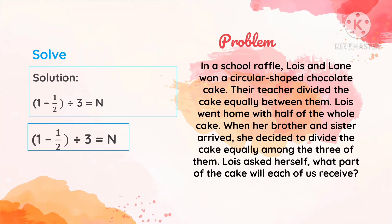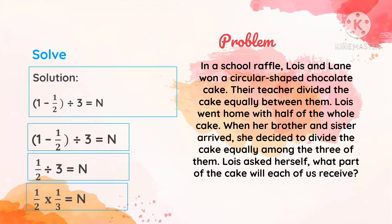Using our number sentence: 1 minus one-half divided by 3 is equal to n. Since 1 minus one-half is one-half, we have one-half divided by 3 is equal to n. Then we change the division sign to a multiplication sign and get the reciprocal of our divisor 3, so 3 becomes one-third.